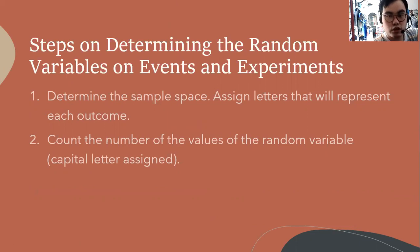Here are the steps on determining the random variables on events and experiments. First, we determine the sample space. Then we assign letters that will represent each outcome. Then we count the number of values of the random variable, wherein the capital letter is assigned.